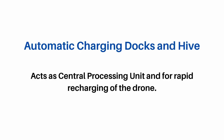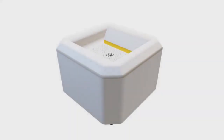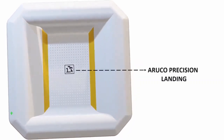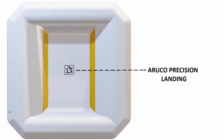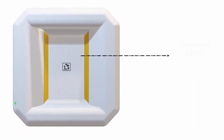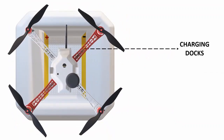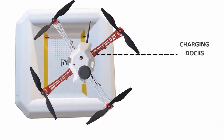Hive acts as a central processing unit to communicate with the drone and the mobile application. It is designed so that precision landing is enabled using Aruco markers. The drone is uniquely designed to reliably and safely land in the Hive. In an emergency, fail-safe protocols ensure the drone lands and disarms safely. Once the drone lands in the Hive, charging is automatic and rapid, with incremental charges done in minutes.